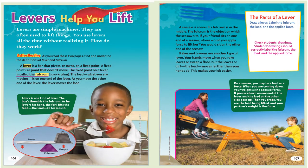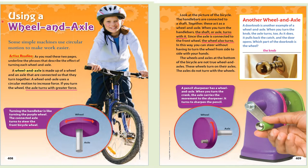Using a wheel and axle: some simple machines use circular motion to make work easier. As you read these two pages, underline the phrases that describe the effect of turning each wheel and axle. A wheel and axle is made up of a wheel and an axle that are connected, so that they turn together. A wheel and axle uses a circular motion to increase force. If you turn the wheel, the axle turns with greater force. Turning the handlebar is like turning the purple wheel. The connected axle turns to steer the front bicycle wheel.